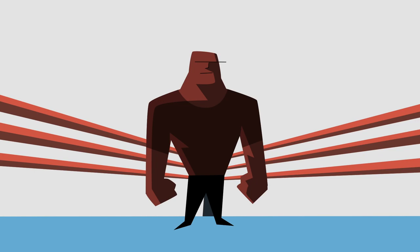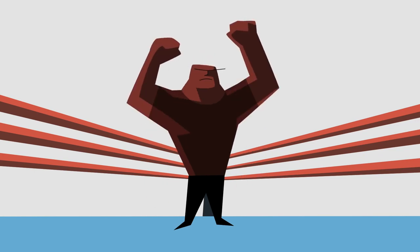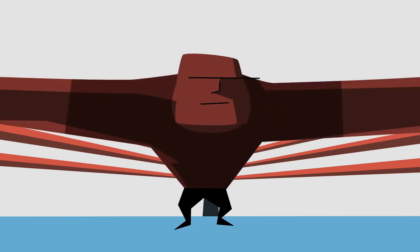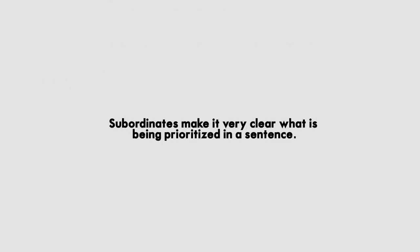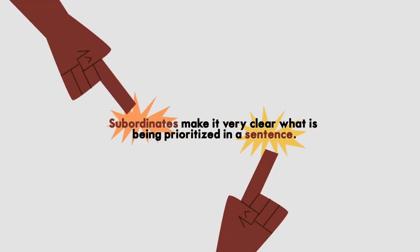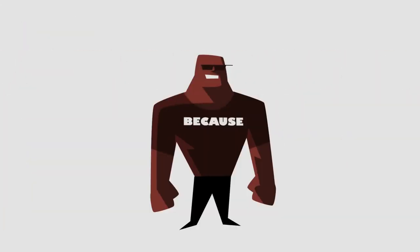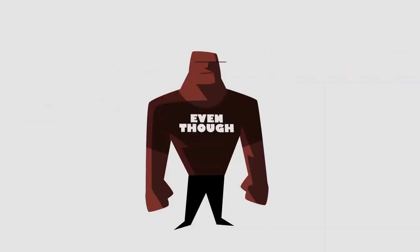Subordinates, on the other hand, are the WWE heavyweight champions of sentences. They are words that connect two unequal things: dependent and independent clauses. Subordinates make it very clear what is being prioritized in a sentence. Commonly used subordinates are: although, because, before, however, unless, and even though.